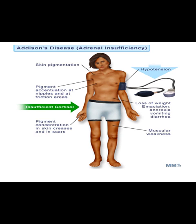In a person with Addison's disease, the various manifestations include skin pigmentation, pigmentation at the nipples, friction areas, skin creases, and scars, along with hypotension, muscular weakness, loss of weight, anorexia, vomiting, and diarrhea. The person may develop a shock-like collapse. In summary, adrenal insufficiency may result from a problem with the adrenal gland itself or with ACTH production, causing three types of problems: glucocorticoid deficiency, mineralocorticoid deficiency, and melanin deposition.